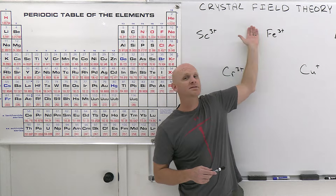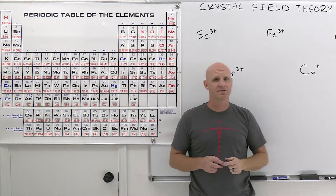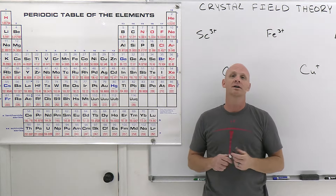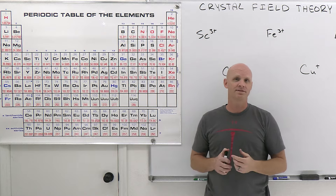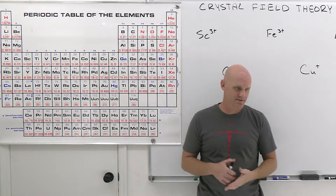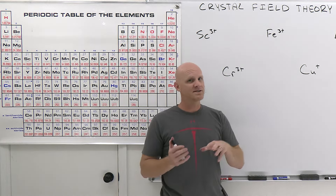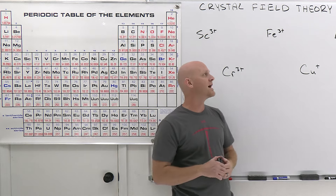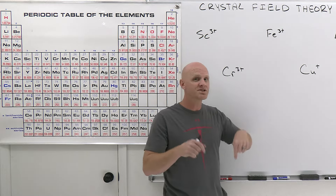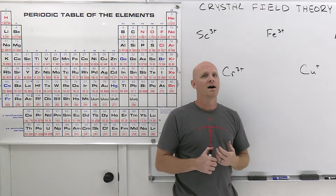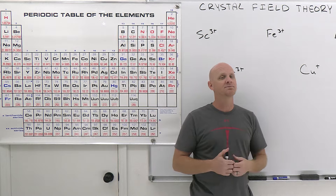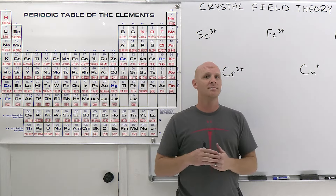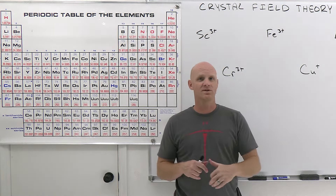Before we get going into Crystal Field Theory, we need a quick refresher on the electron configurations of transition metal cations — some exceptions to remember, and how to remove electrons to make the cations. How many D electrons these transition metals have is going to be relevant both in this lesson and the next one.